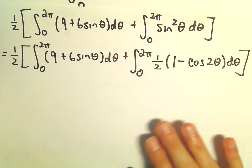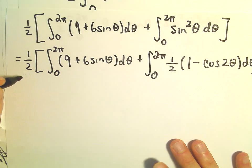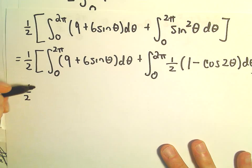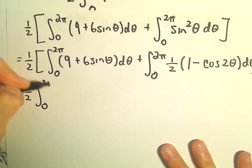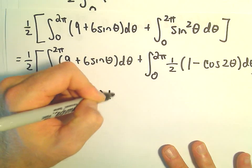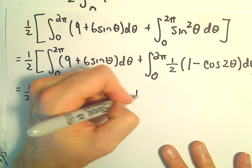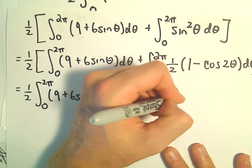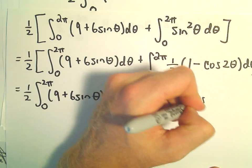All right, so just more simplification. So we have 1 half the integral from 0 to 2 pi, 9 plus 6 sine theta d theta. Plus we've got 1 half, the integral from 0 to 2 pi of 1 minus cosine of 2 theta.